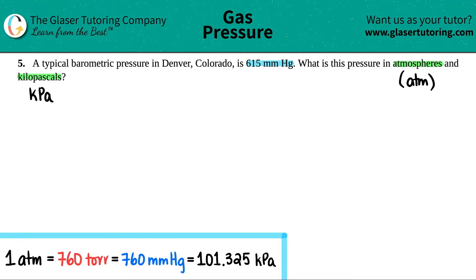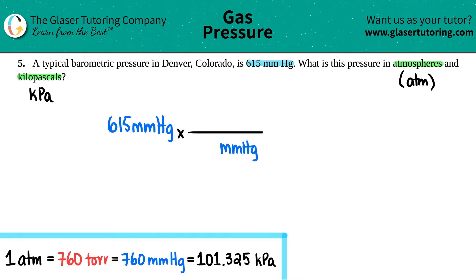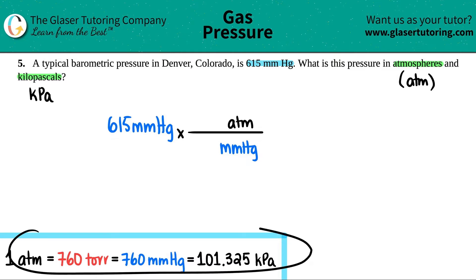Now let's start converting. All we have to do is convert 615 millimeters of mercury — abbreviated mm Hg, where Hg is mercury on the periodic table — into atm and kilopascals. So 615 mm Hg times a ratio. Using dimensional analysis, you throw the unit you don't want on the bottom. Let's work with atm first.